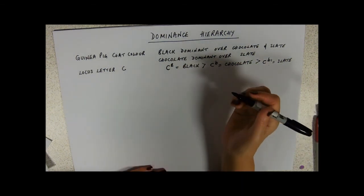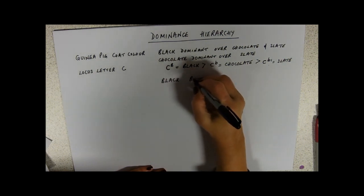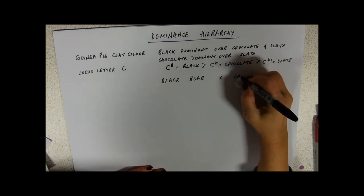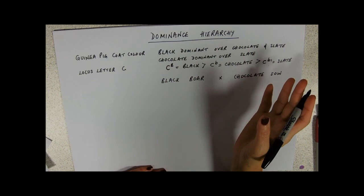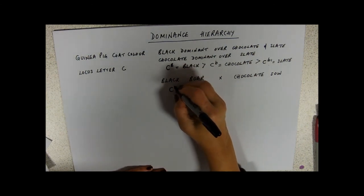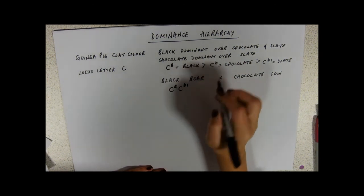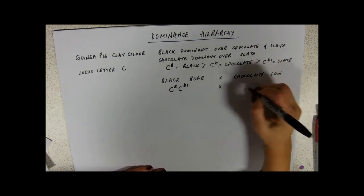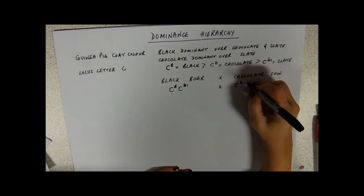So, say you had a black boar. Yes, guinea pigs, baby guinea pigs, male guinea pigs are called boars. And you're crossing that with a chocolate sow. And I'm just going to make these genotypes up. So my black boar has got the genotype C B, C S. Because of this dominant, sorry, S, B1. Because of this dominance hierarchy, of course, it will look black because black is dominant over slate. So even if it's heterozygous it will show up. And my chocolate sow is also, and she's C B, chocolate, and she's also heterozygous.